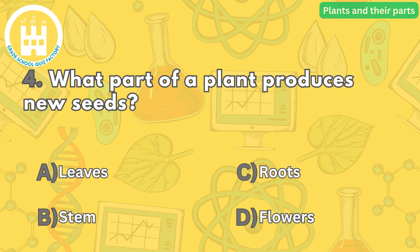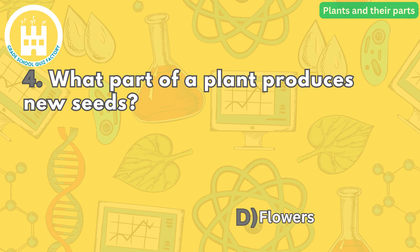Moving on to number four: what part of a plant produces new seeds? The correct answer is letter D. Flowers are the reproductive part of a plant. They produce pollen and contain the female reproductive organ called the ovary, which develops into fruits that contain seeds.